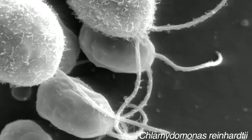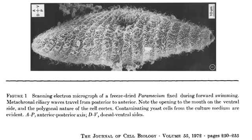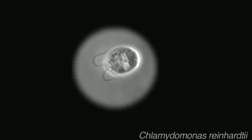Flagella have the same internal structure as cilia, the hairs coating this freeze-dried paramecium. And even though they're found on these simple organisms, they're not simple organs.